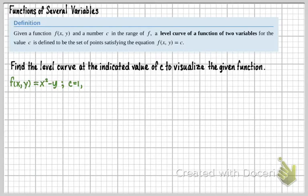Now let's talk about level curves. Given a function f(x,y) and a number c in the range of f, a level curve of a function of two variables for the value c is defined to be the set of points satisfying the equation f(x,y) equals c.